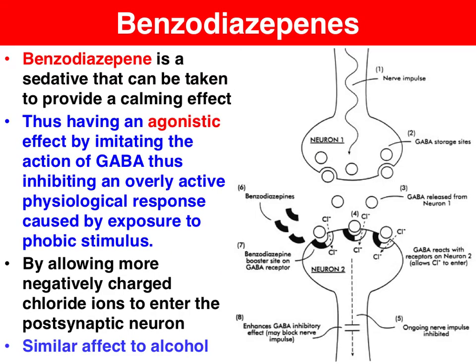To treat this, we can take a benzodiazepine. Benzodiazepine is an umbrella term for a variety of drugs that have a sedative effect, most famous being Valium, Xanax, etc. They have an agonistic effect on the postsynaptic neuron by imitating the effects of GABA and enabling more of those chloride ions to enter the postsynaptic neuron.